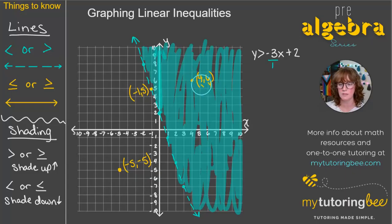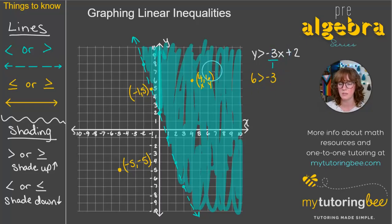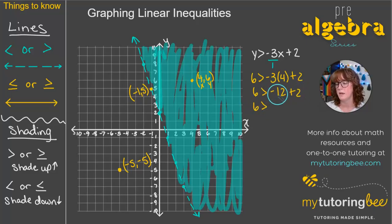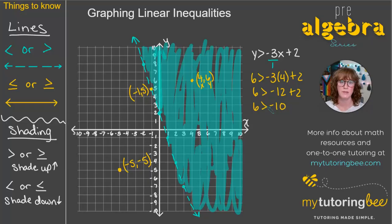For point (4, 6): y is 6, x is 4. Substituting in: 6 is greater than negative 3 times 4 plus 2. Negative 3 times 4 is negative 12, plus 2 is negative 10. This statement is true — 6 is greater than negative 10. So we know we've shaded in the correct direction.